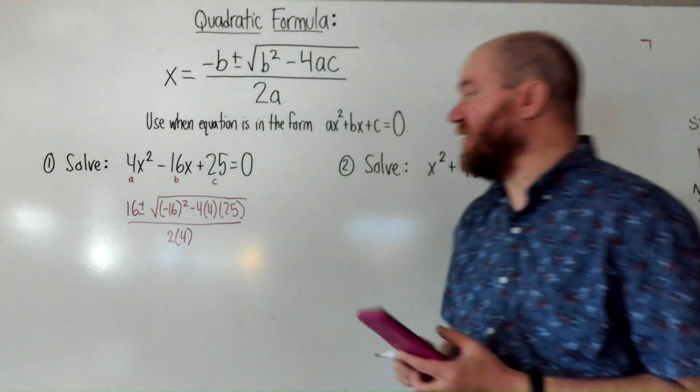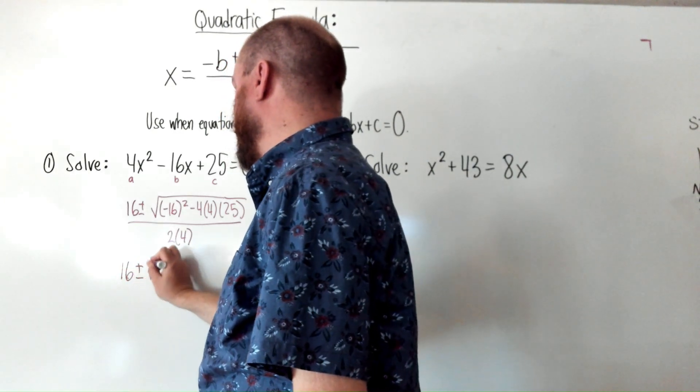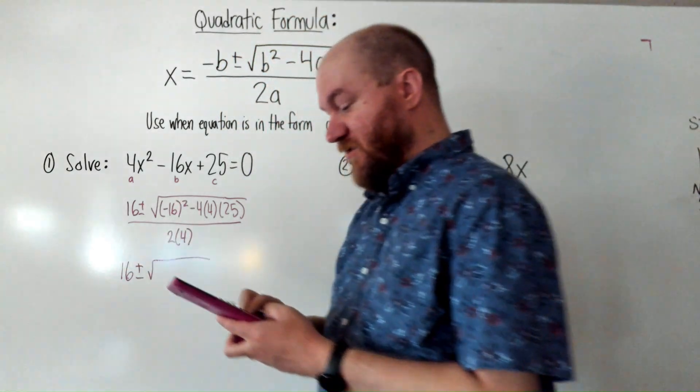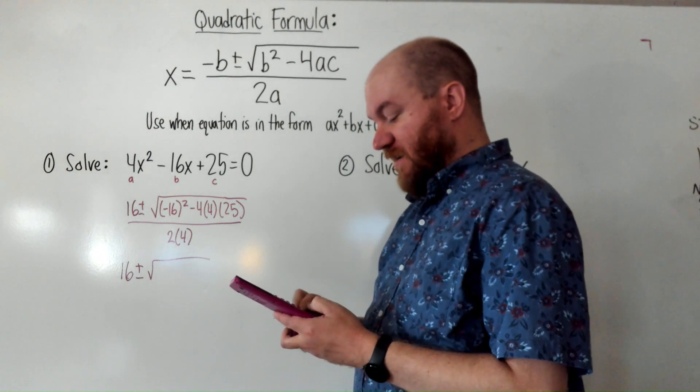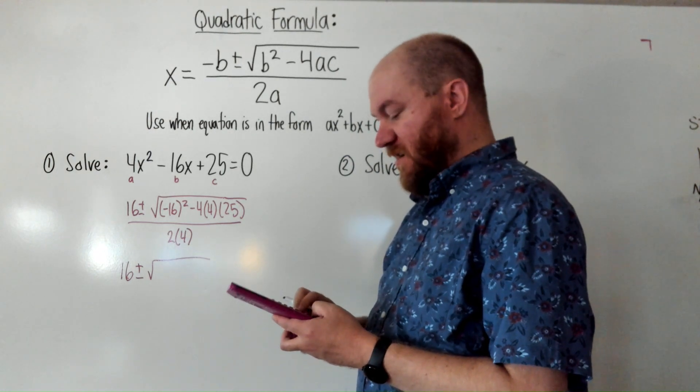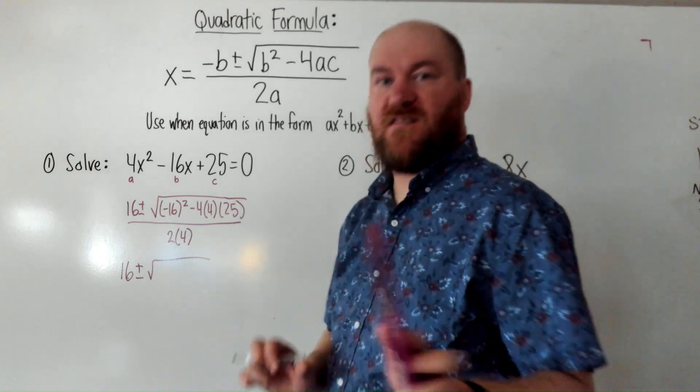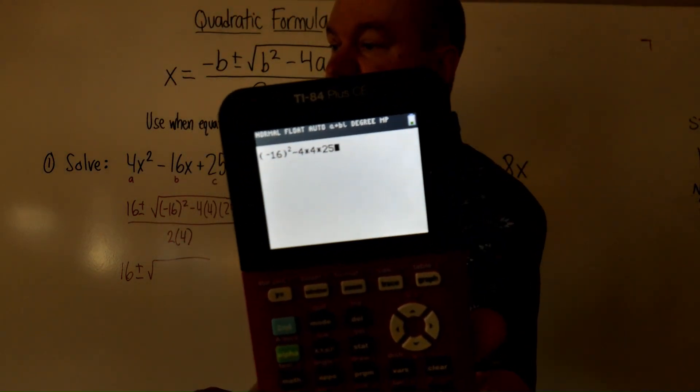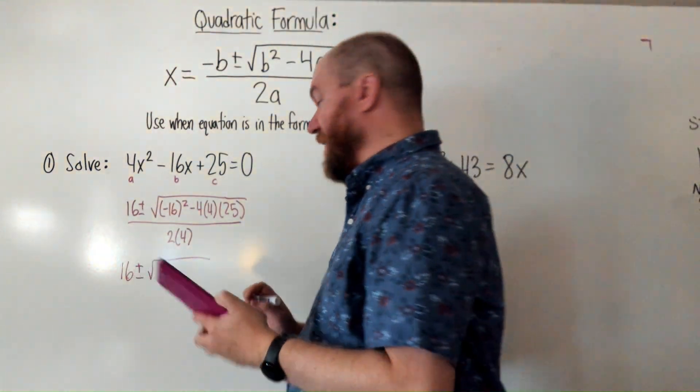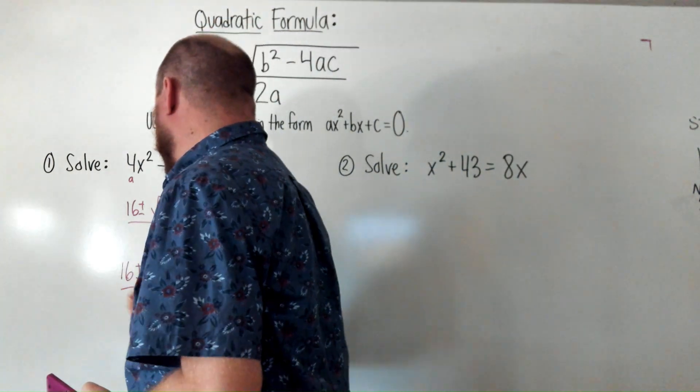So, I'm going to use my calculator to simplify as much as I can here. We get 16 plus or minus, I'll do the whole square root underneath on my calculator. Negative 16 squared minus 4 times 4 times 25. So, you can see I do the whole thing all in one step of my calculator without the square root sign. And I get negative 144 all over 8.